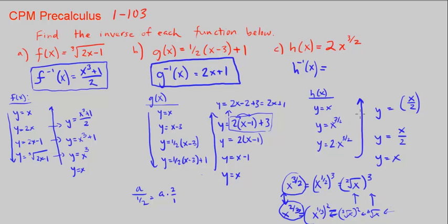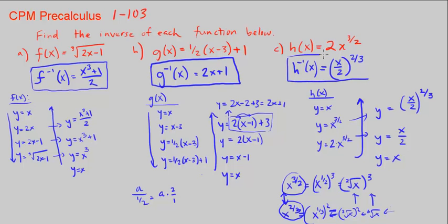So the opposite of x to the 3/2 is x to the power of 2/3. Our inverse function of h is (x over 2) to the power of 2/3. This ends CPM Pre-Calculus Chapter 1, Number 103.